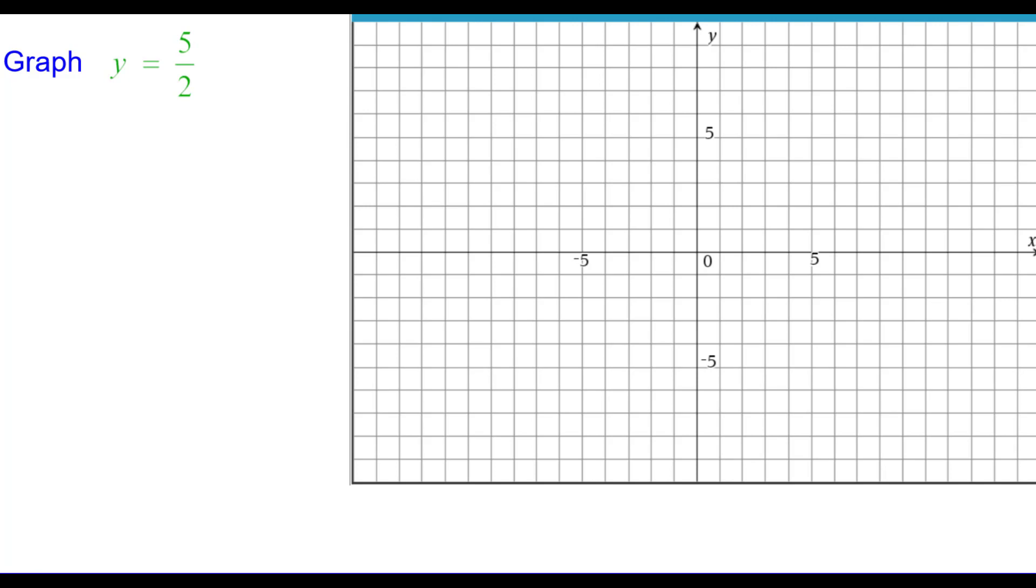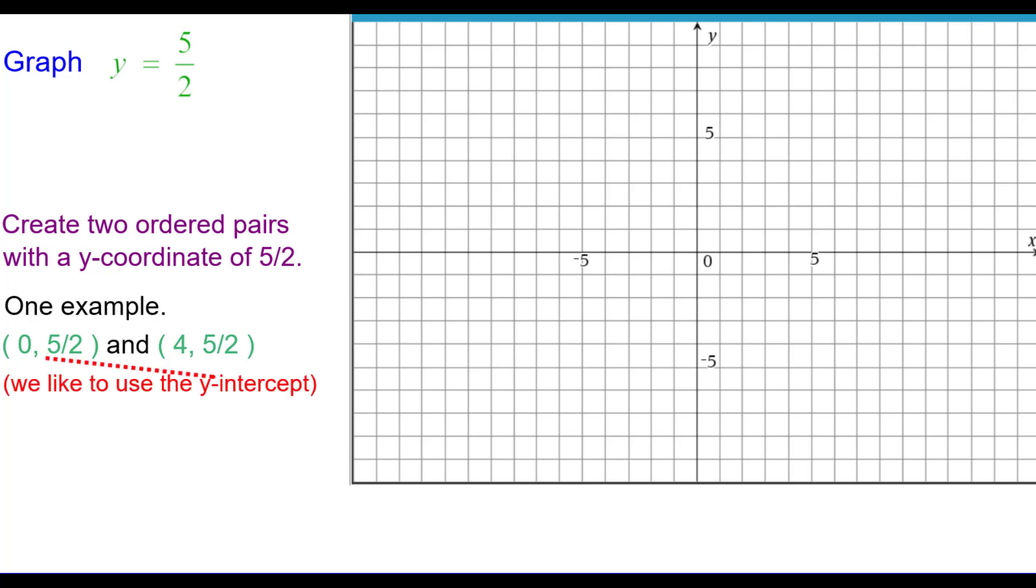Let's graph y equals 5 halves. Here the constant is 5 halves, or 2 and a half. We need to create two ordered pairs with a y-coordinate of 5 halves. One example would be 0 comma 5 halves and 4 comma 5 halves. We do like to use the y-intercept when possible.